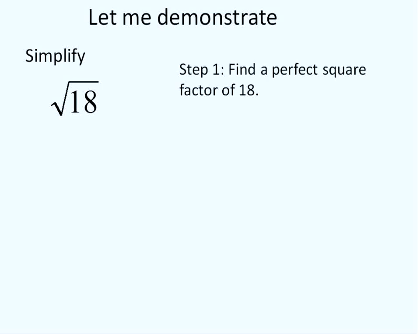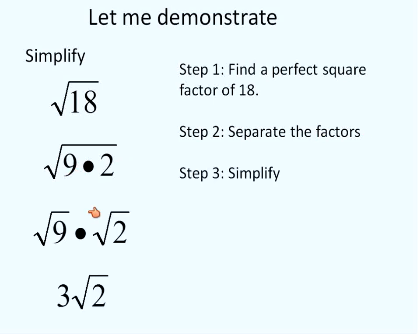So, first, you would find the perfect square factors of 18, if there are any. And that's why you're going to need to know that list. 1, 4, 9. Oh, 9. 9 is a factor of 18. So, what we can do is rewrite 18 as 9 times 2. So, we're separating the factors. This can also be written as the square root of 9 times the square root of 2.